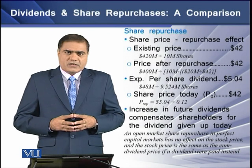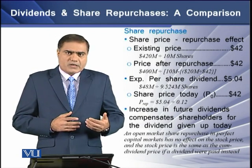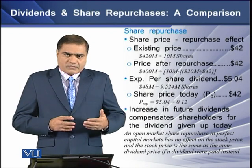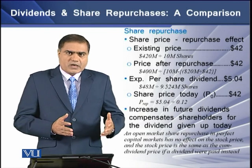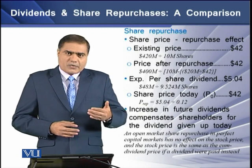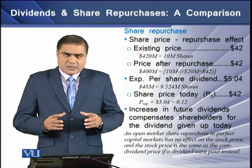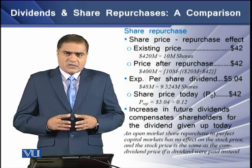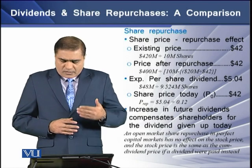The expected dividend per share in the future under repurchase is $5.04, an increase over the current dividend of $4.80. Discounting the expected future price over the firm's unlevered cost of capital gives a share price of $42. The increase in future dividends compensates current shareholders for foregoing the current dividend of $4.80 per share. Thus, an open-market share repurchase in perfect capital market settings has no effect on stock price, which remains the same as the cum-dividend price.